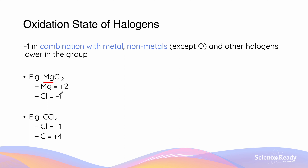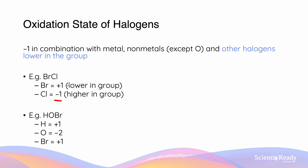Magnesium, because it is a group two metal, is going to have an oxidation state of +2. The chloride ions are going to have an oxidation state of −1 because halogens have an oxidation state of −1 when in combination with a metal. In carbon tetrachloride (CCl₄), chlorine is again −1 because it is in combination with a non-metal, meaning carbon is going to have an oxidation number of −(−1 × 4) = +4. In BrCl, chloride is −1 because it is in combination with another halogen lower in the group; because bromine is lower in the group, it is less electronegative than chlorine, and therefore bromine will have an oxidation state of +1.